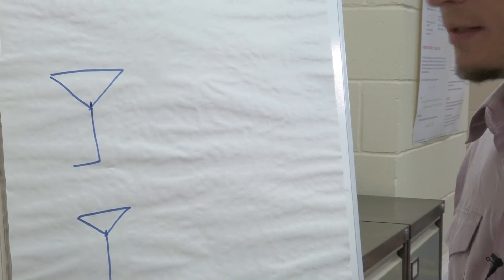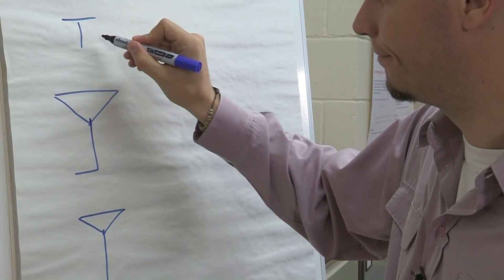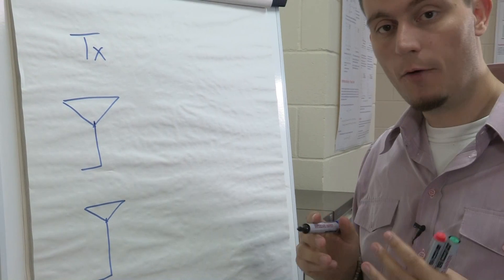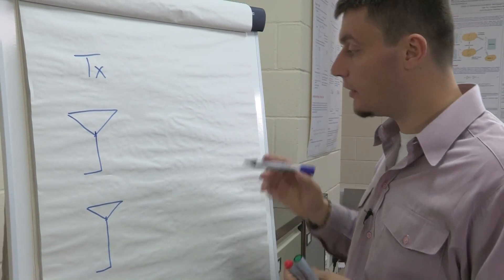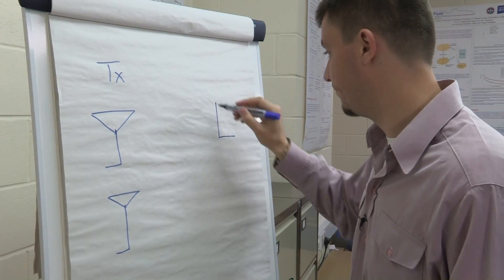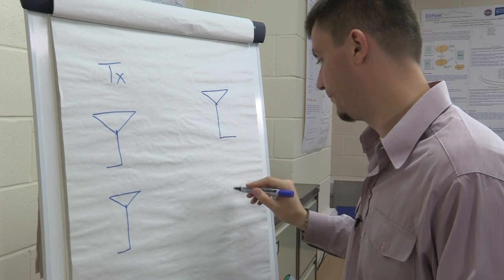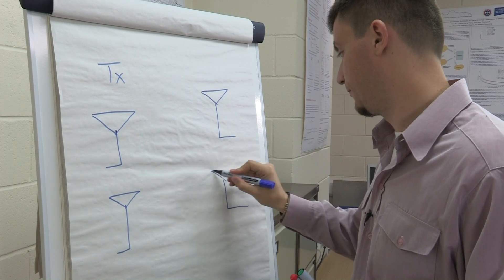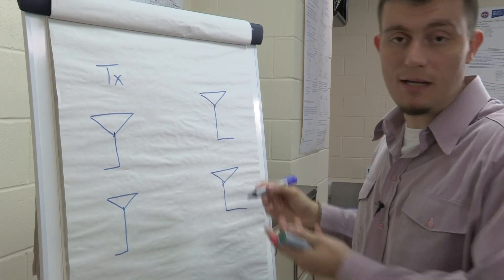Let's label these two transmit antennas as TX. Now, we have also two receive antennas. Let's label these RX.